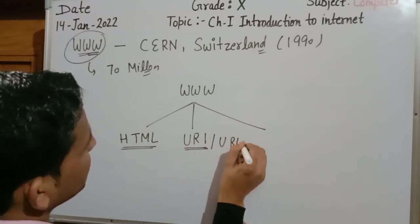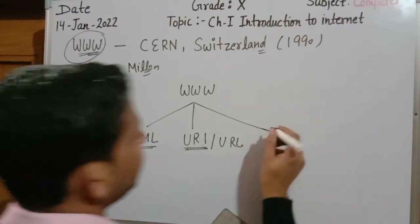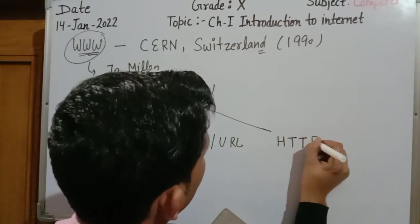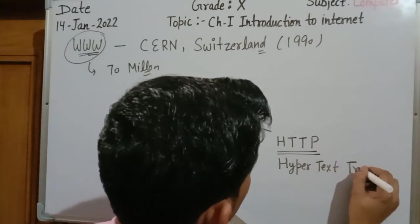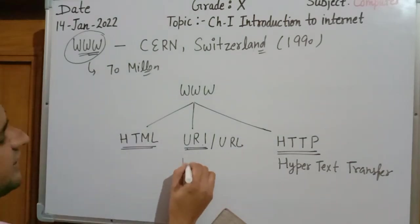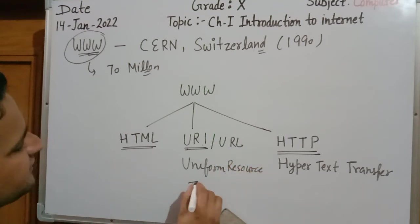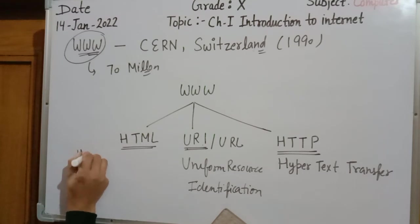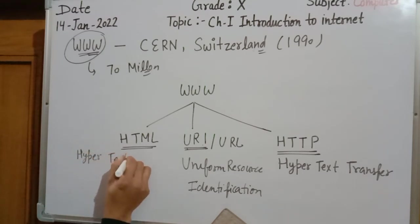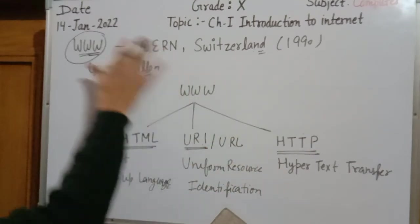To access web pages, we need a specific language that is HyperText Markup Language (HTML). Each page has a specific address known as URI or URL — Uniform Resource Identifier or Uniform Resource Locator. We also need a protocol to access the web page, known as HyperText Transfer Protocol (HTTP). These three resources — HTML, URI/URL, and HTTP — are all required to prepare and access a web page on the World Wide Web.